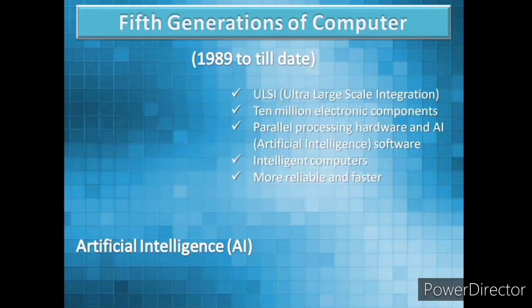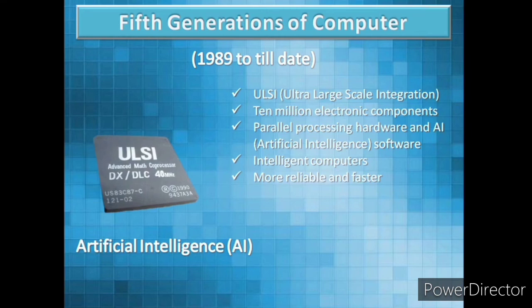The fifth generation of computers was from 1989 to the present. In this generation, VLSI technology became ULSI — Ultra Large Scale Integration. Microprocessor chips produced in this generation had up to 10 million electronic components. This generation of computers is based on parallel processing hardware and AI software.